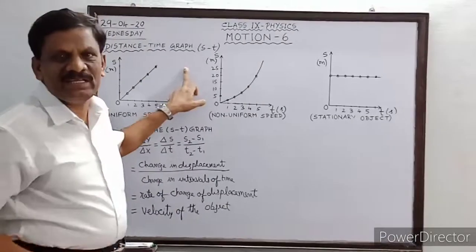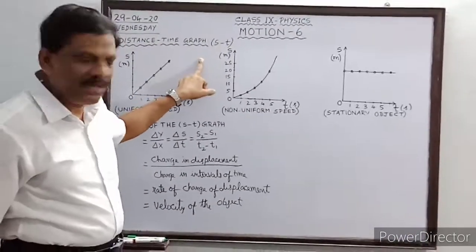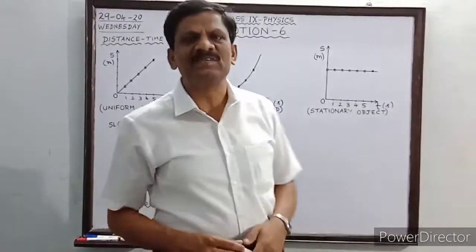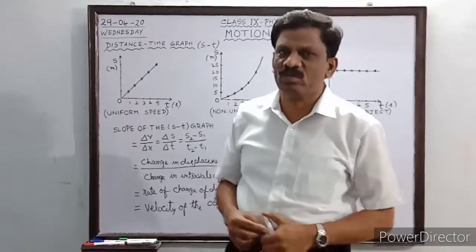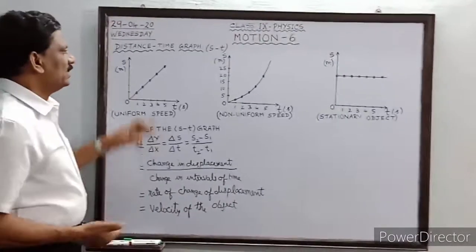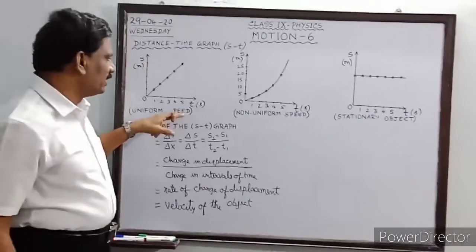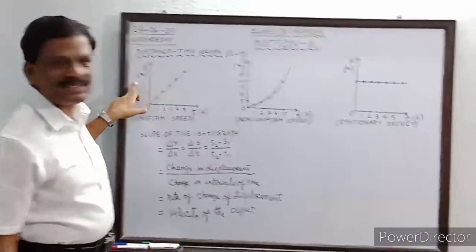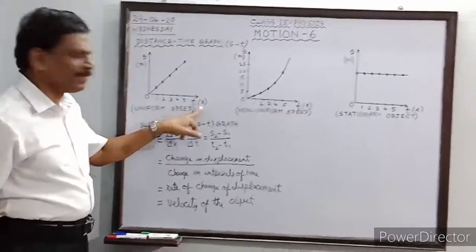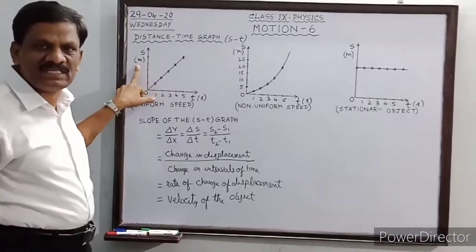The first graph to be studied is the distance-time graph, or S-T graph. It is also called the displacement versus time graph, because when a body moves along a straight line, distance equals displacement. In this graph, time is taken along the x-axis in seconds, and distance or displacement is taken along the y-axis in meters.